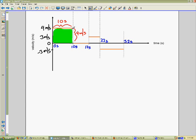Now if I find the area of this rectangle, I say that I can find the displacement of this object from 0 to 10 seconds. Let's see if that makes sense.